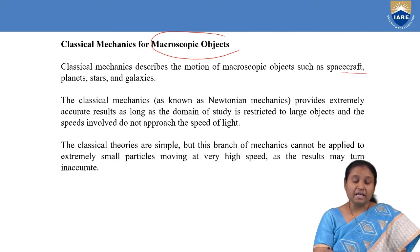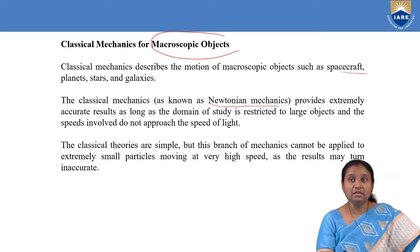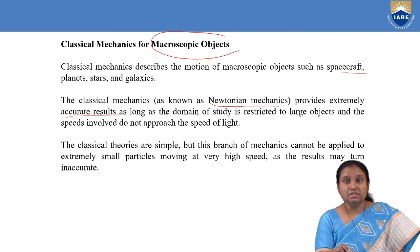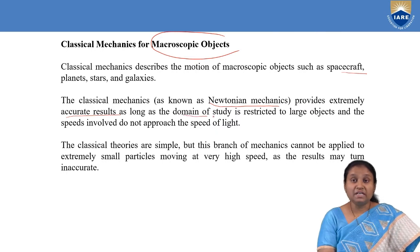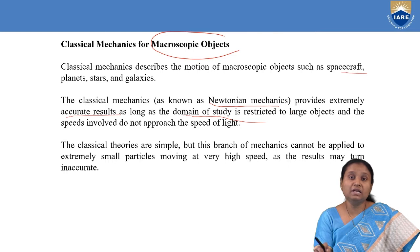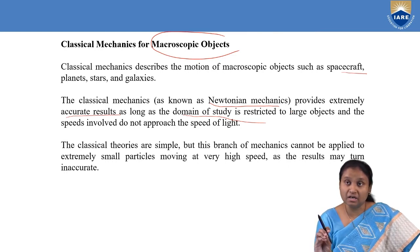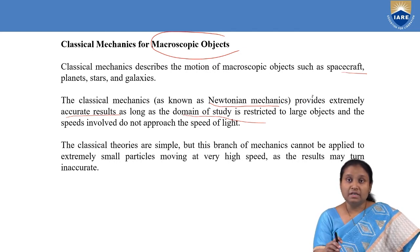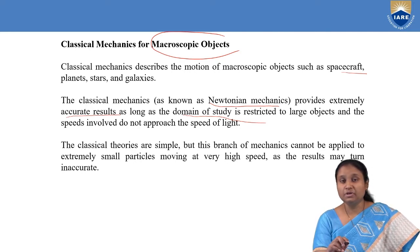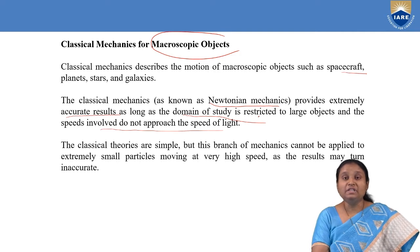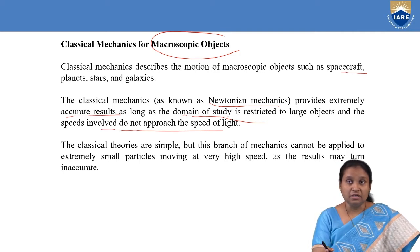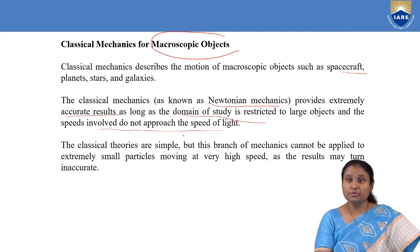Classical mechanics is also called Newtonian mechanics, and it provides extremely accurate results as long as the domain of study is restricted to large objects. Classical physics can be applied only for large objects, and when dealing with large objects it gives accurate results. Regarding speeds, classical mechanics deals with non-relativistic speeds — the speeds involved do not approach the speed of light.